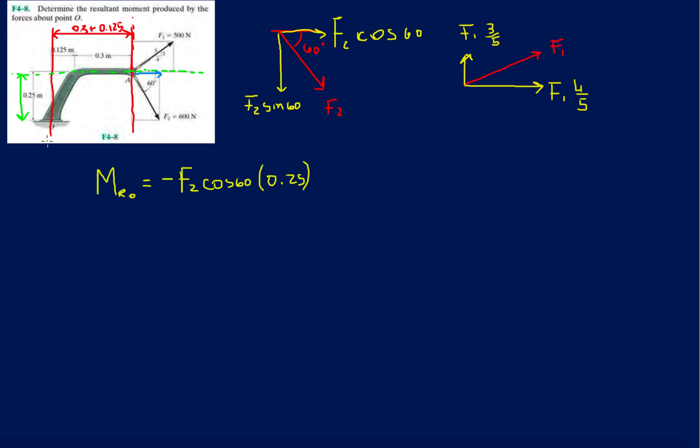Now F2 sin 60 will also be clockwise. So if you were to pull down on this thing at point A, you want to make this bend in a clockwise direction. So we're going to do negative F2 sin 60 times the distance that we said, the red distance over here, which is 0.3 plus 0.125, which is 0.425. So that takes care of the x and y components of force 2.